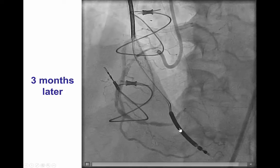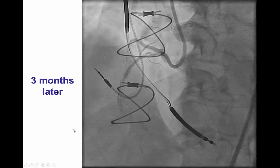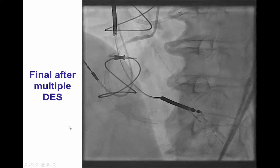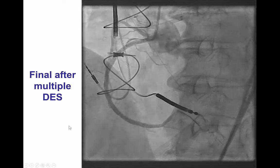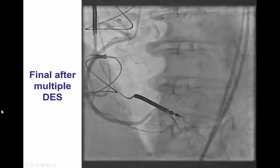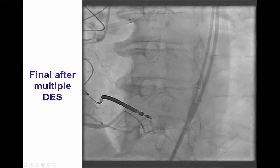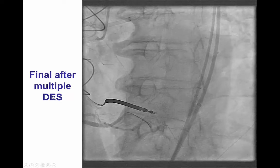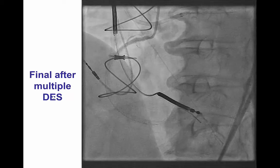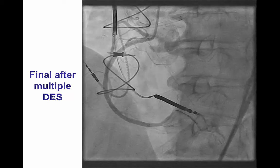This was easily wired with a workhorse guidewire, and after placing several stents, we did have TIMI flow to the right coronary artery.